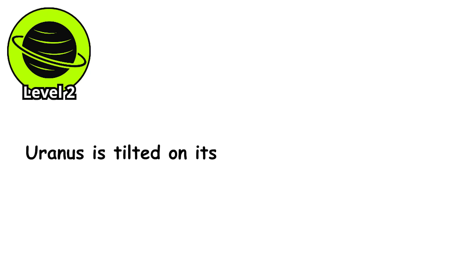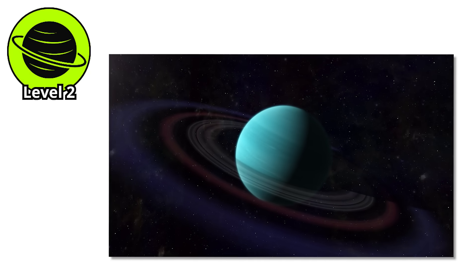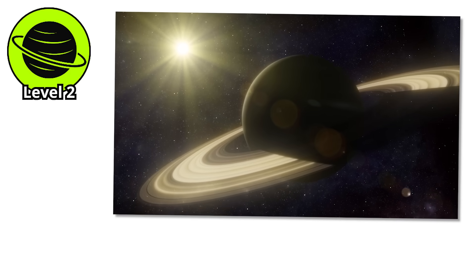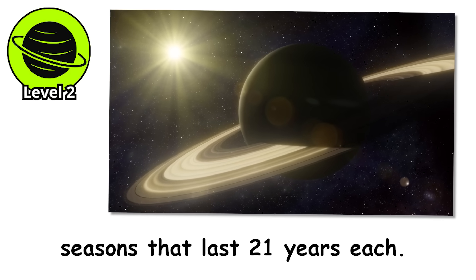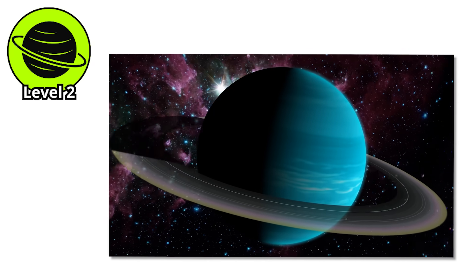Uranus is tilted on its side at a 98-degree angle, rolling around the sun like a cosmic bowling ball. Scientists think something massive, probably planet-sized, smacked into it billions of years ago. This means Uranus experiences seasons that last 21 years each. Each pole gets four decades of continuous sunlight followed by four decades of total darkness.